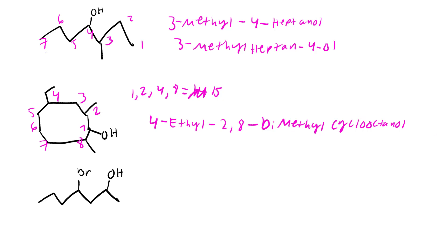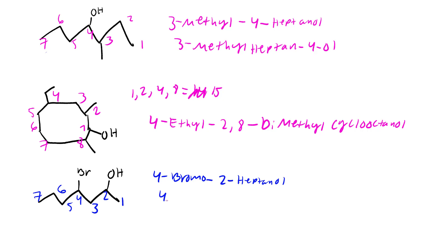So we're going to start counting over here because it's closer to the alcohol: 1, 2, 3, 4, 5, 6, and 7. We have a 4-bromo, my alcohol is on 2, and you can say heptanol. You can also say 4-bromo-heptan-2-ol. The 2 goes between the N and the OL.